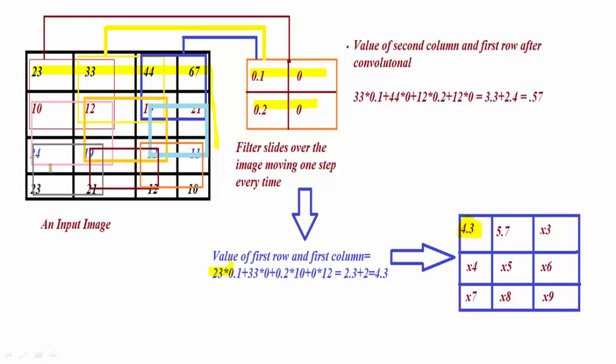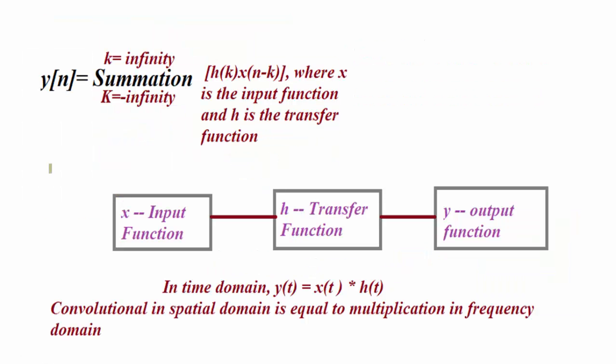This part has to be understood in a more conceptual way, which will be explained in the next slides. There is an input function, a transfer function, and an output function. The transfer function is equal to the output function divided by the input function, such that y(t), the output function, equals the convolution of x(t) into h(t), where h(t) is the transfer function. Always remember: convolution in the spatial domain is always equal to multiplication in the frequency domain. This is very important — calculations that are difficult in one domain become very easy in another.